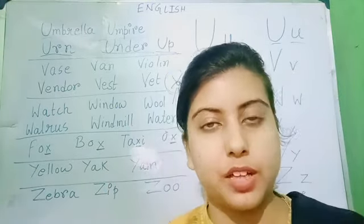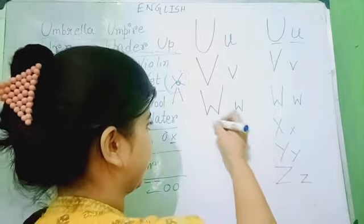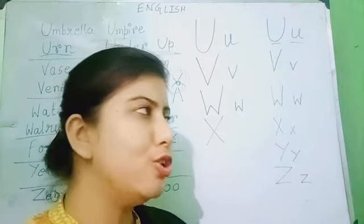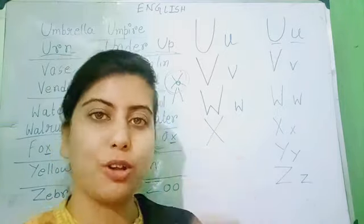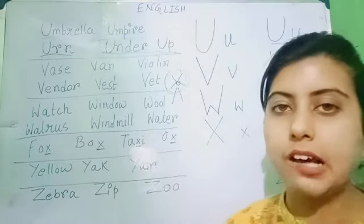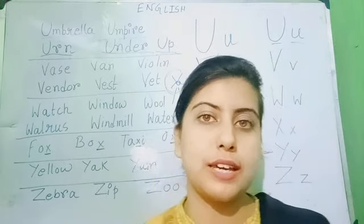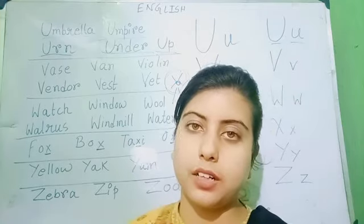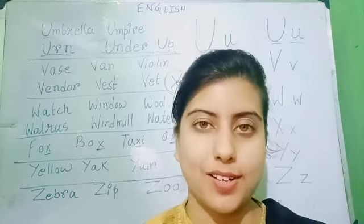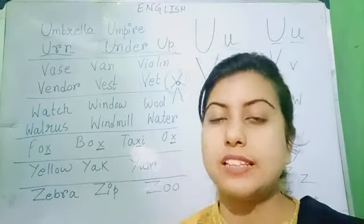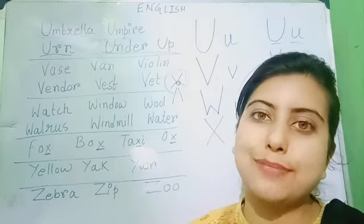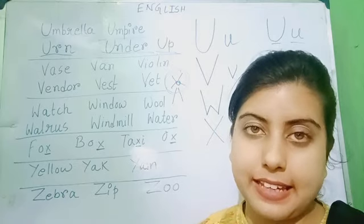Now, we have X. How to write capital X? Very easy — two slanting lines crossing each other. And the small x looks just like this but smaller. Now, children, X is not used in the beginning of a word. It is used in the end or in the middle, but we don't frequently use X in the very beginning. But there are words like Xerox, Xylophone, but in your book those words have not been given.